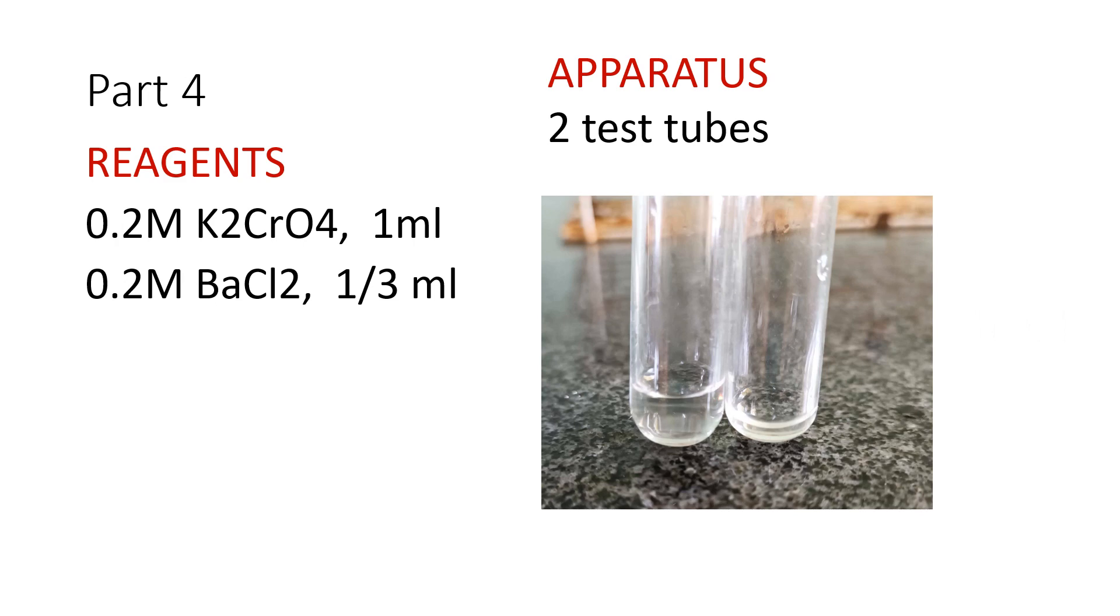Part 4 is preparation of salt by the reaction of 2 salts. Your reagents consist of 0.2 molar potassium dichromate, 1 ml. This is how much 1 ml is, about 1 cm in height. And 0.2 molar barium chloride, 1 third ml. This is how small it is. You will mix them together.